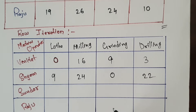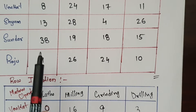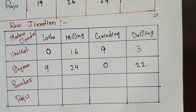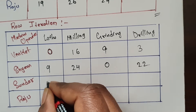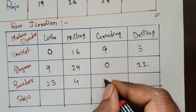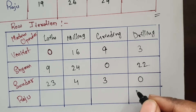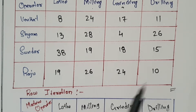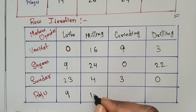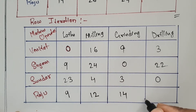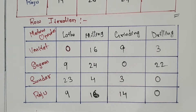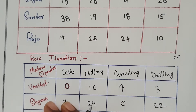After row iteration you get: Venkat: 0, 16, 9, 3; Shyam: 9, 24, 0, 22; Sundar: 23, 4, 3, 0; Raju: 9, 16, 14, 0. Next step you have to go for column iteration.